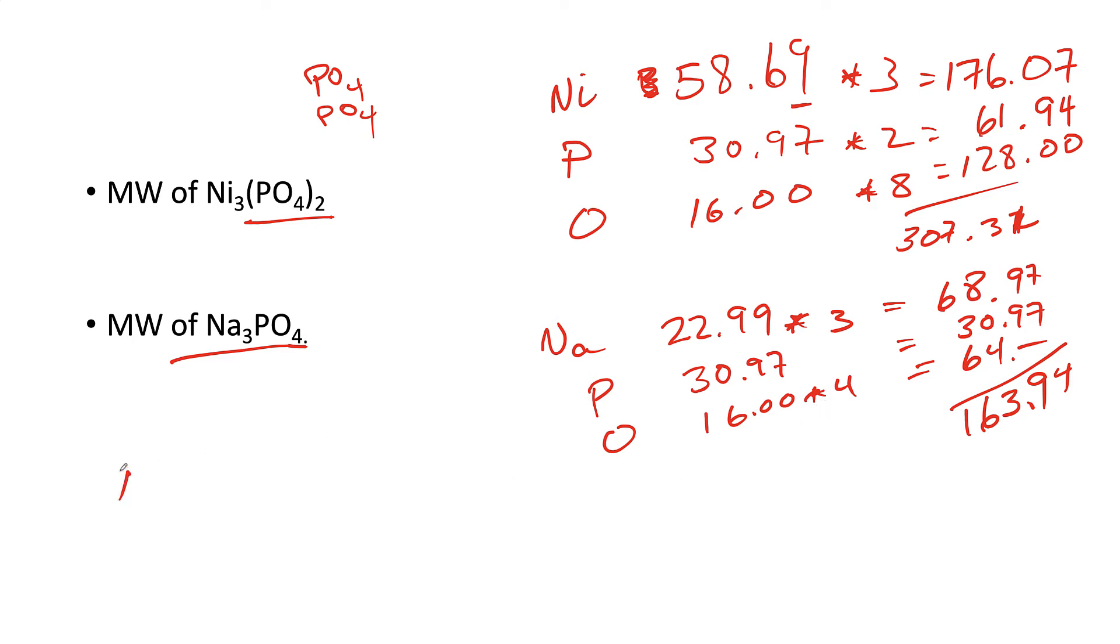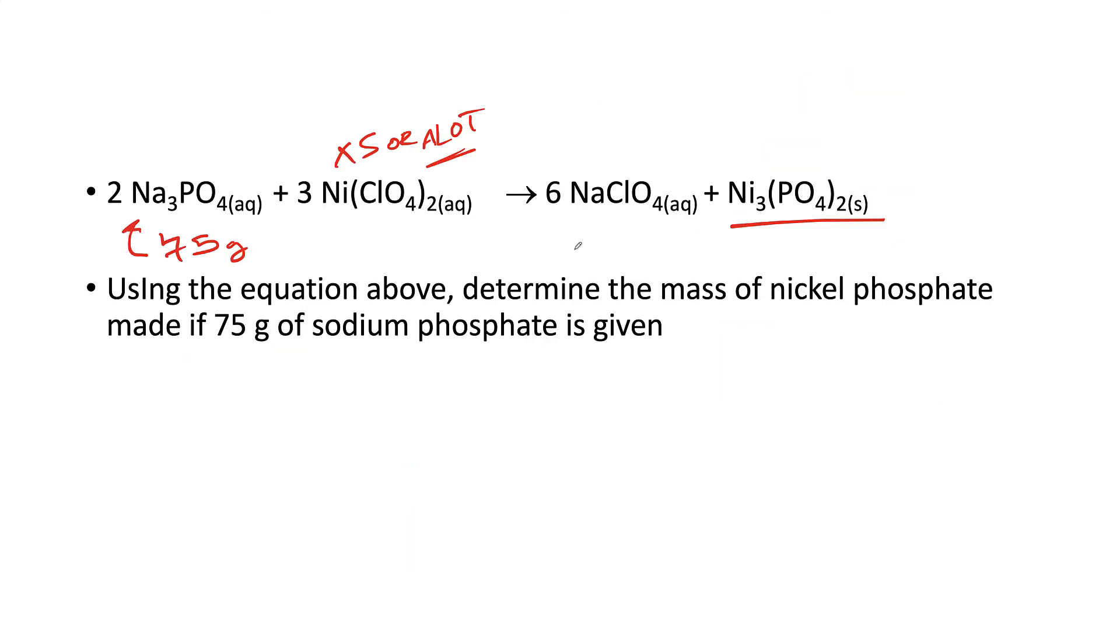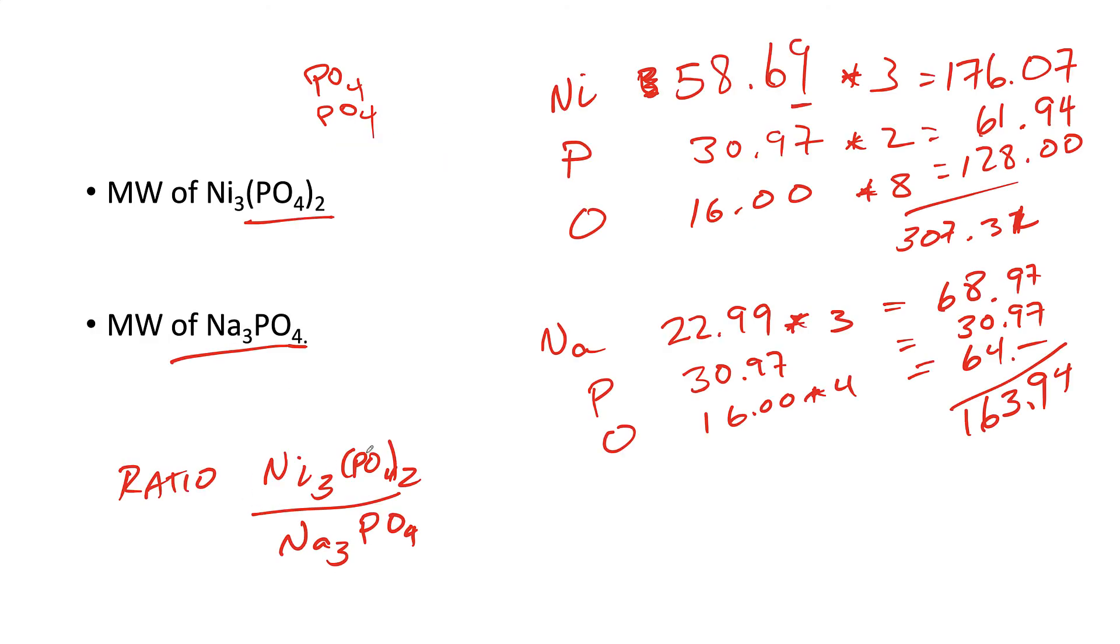Next, what we need to figure out is the molar ratio between Ni₃(PO₄)₂ and Na₃PO₄, because Na₃PO₄ is what we start with. This is my product. So we'll go back up to our equation. We have one of these and we've got two of these, so that's going to be a 1 to 2 ratio. If I need to flip it, it'd be 2 to 1. So this is the three parts of the information we need to actually do the calculation.